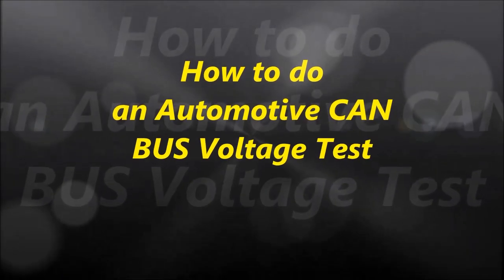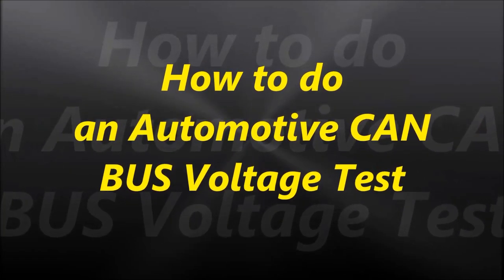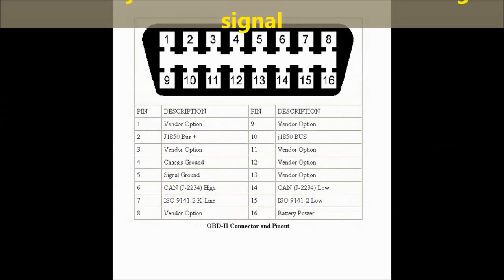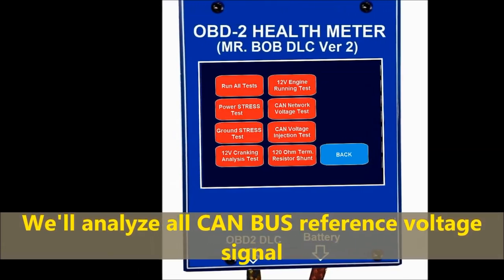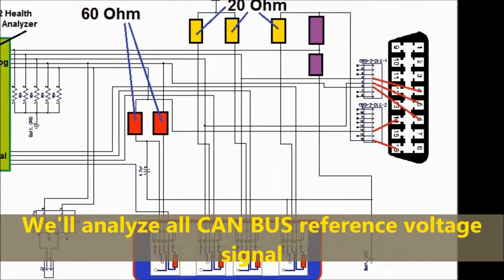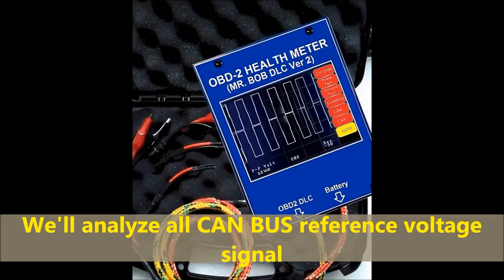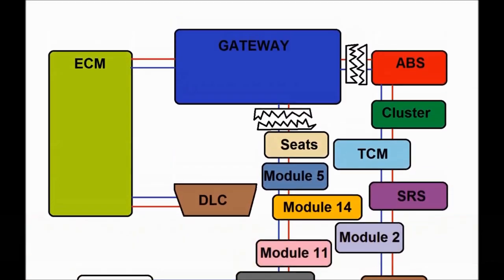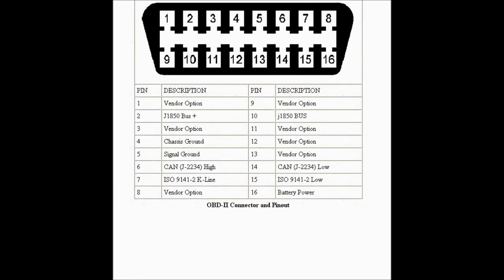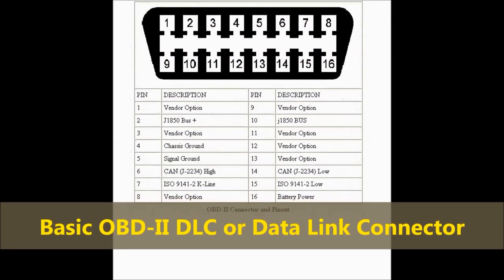Hello everybody and welcome to another video. Today we're going to talk about automotive CAN bus voltage testing and explain how you arrive at the voltages you see at any CAN vehicle. First, a few basics. This is the basic OBD2 DLC — the data link connector — on any automobile made after 1996. Almost everything after that became CAN, the controller area network, which was originally developed by Bosch.